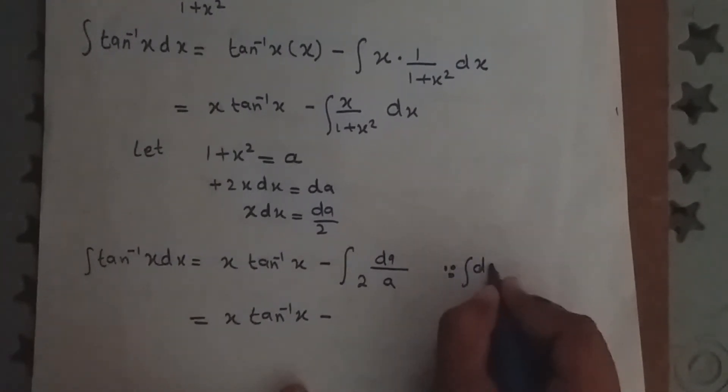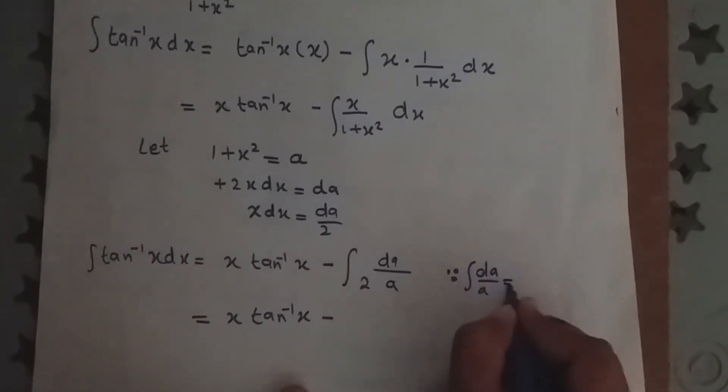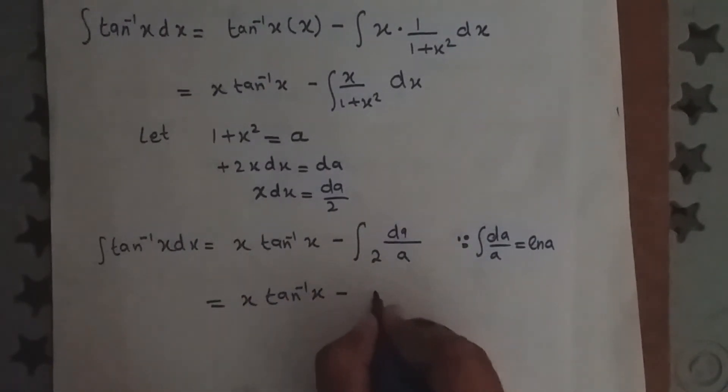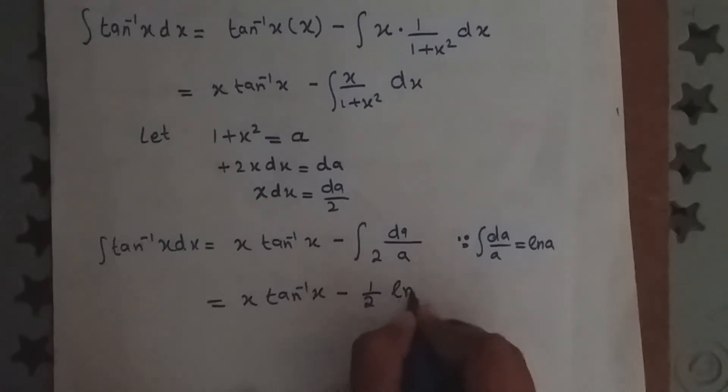Since integration of dA over a equals ln a, this becomes minus 1 by 2 ln a.